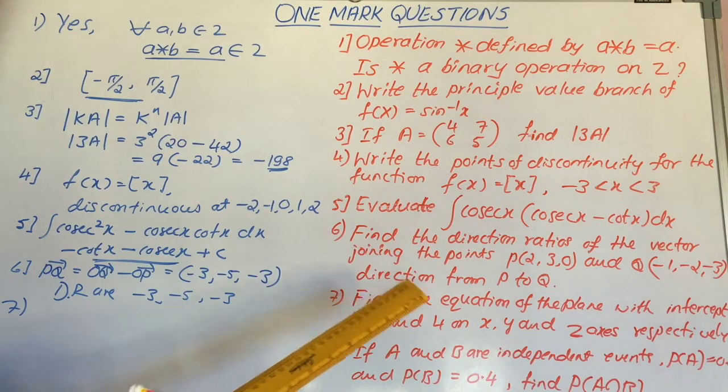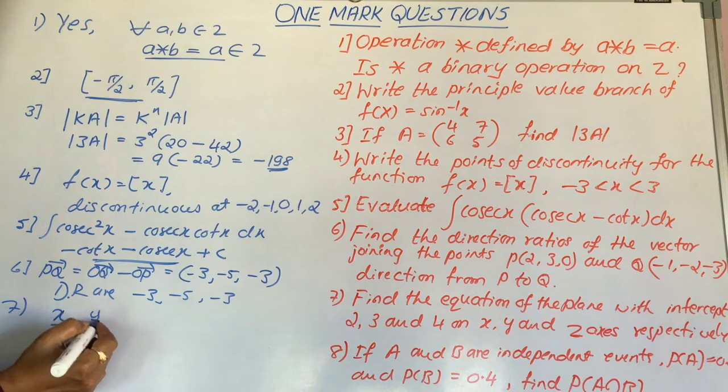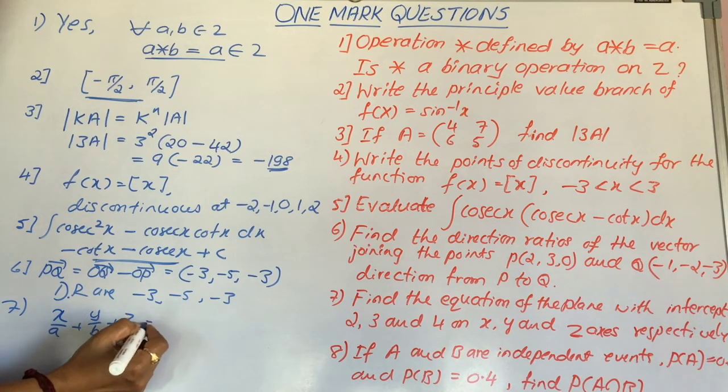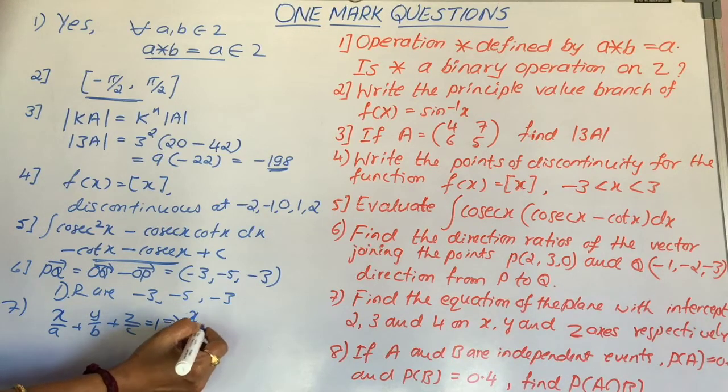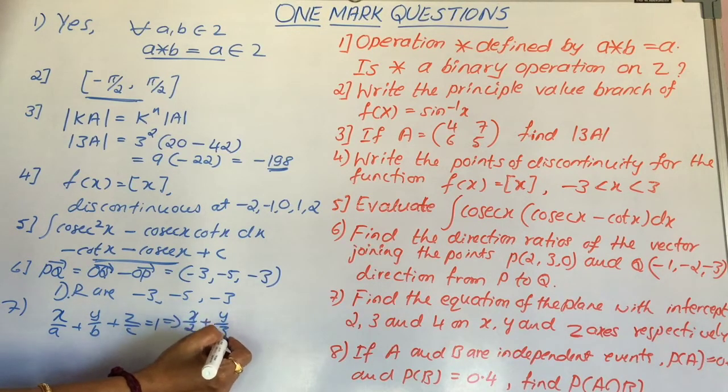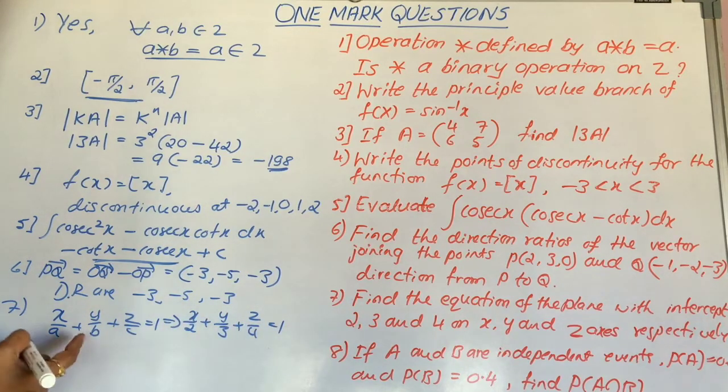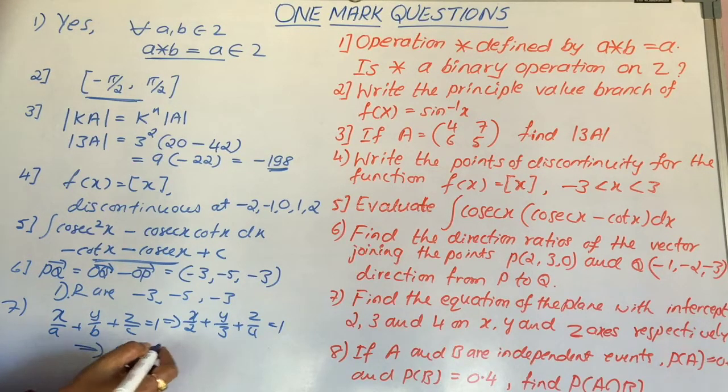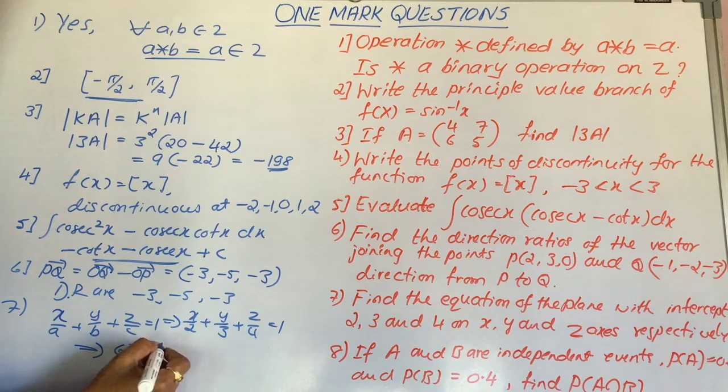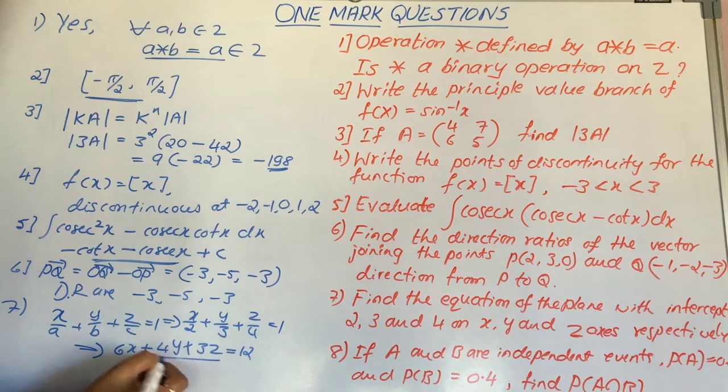We know that the equation of the plane related to this is x by a plus y by b plus z by c equal to 1. Therefore, if we replace the values x by 2 plus y by 3 plus z by 4 equal to 1. If we take 12 as the LCM, so we will get 6x plus 4y plus 3z equal to 12. This is the required equation of the plane.